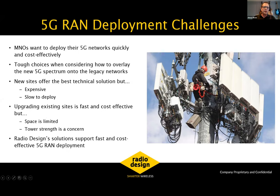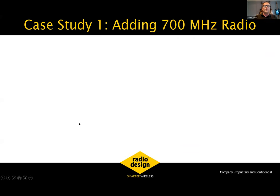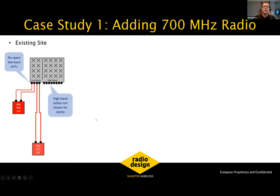Radio Design can offer a lot of support here. The first case study is simply adding a 700 MHz radio to an existing site. Here we have a block diagram of the existing site — a modern antenna array with four low-band ports and eight high-band ports. On the low-band side, we have an 800 MHz radio and a legacy 900 MHz base station mounted on the ground with feeder cables. The immediate problem is that there are no spare low-band ports — they're all used up.